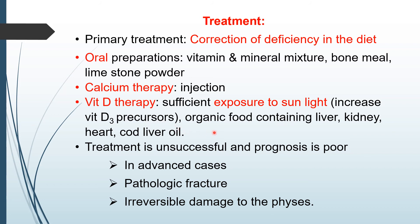Certain organic foods given in the diet — such as liver, kidney, heart, and cod liver oil — are rich in vitamin D. Vitamin D2 and D3 can also be given for treatment. Mostly the treatment is successful.